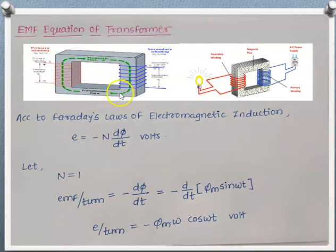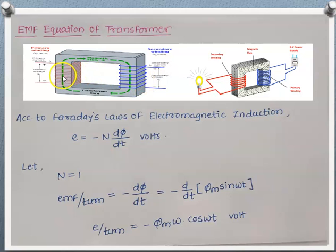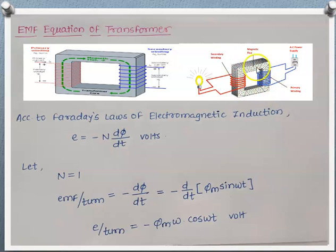As discussed in the previous session, the transformer consists of a core made up of magnetic material having low reluctance, so that the magnetic flux produced by the primary winding can easily pass through it. We have two windings: the primary winding connected to AC supply, and the secondary winding connected to the load. When supply is given to the primary winding, current flows and produces alternating flux, which flows through the magnetic path and links with the secondary winding, inducing an EMF in it.